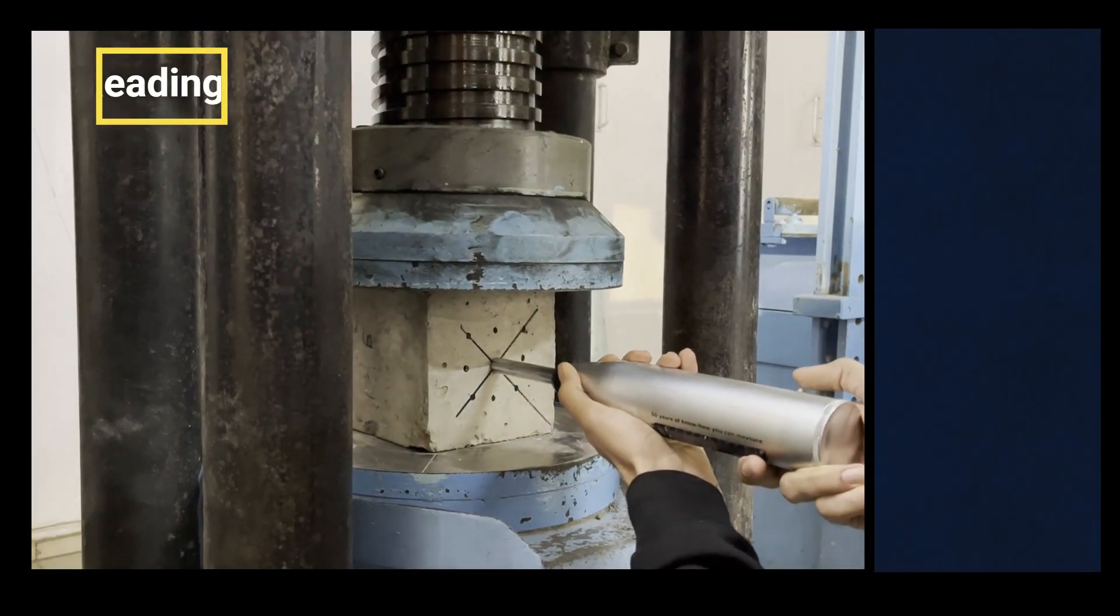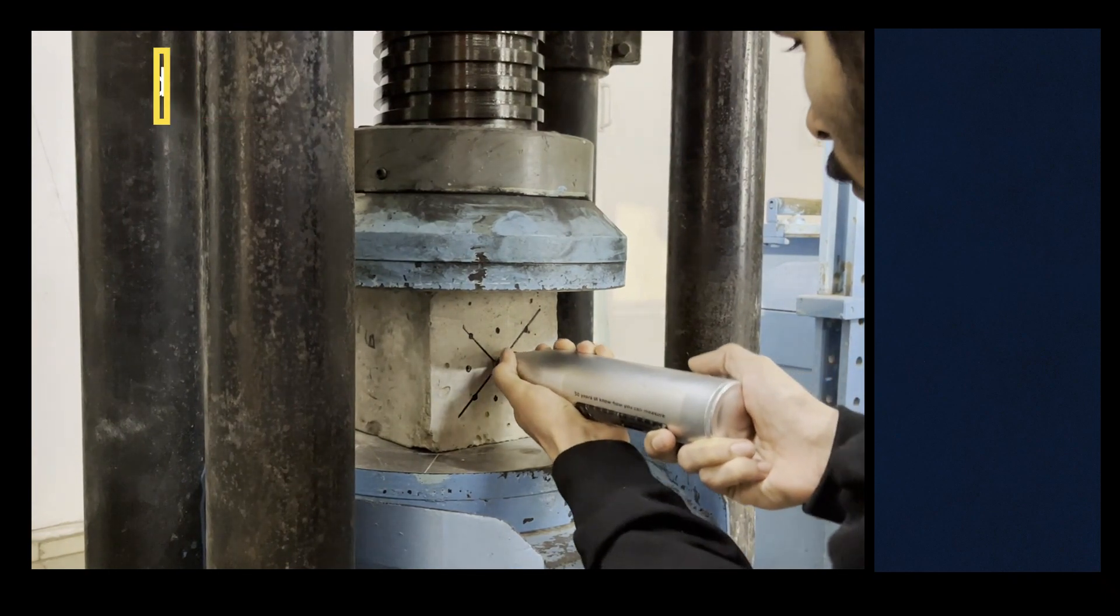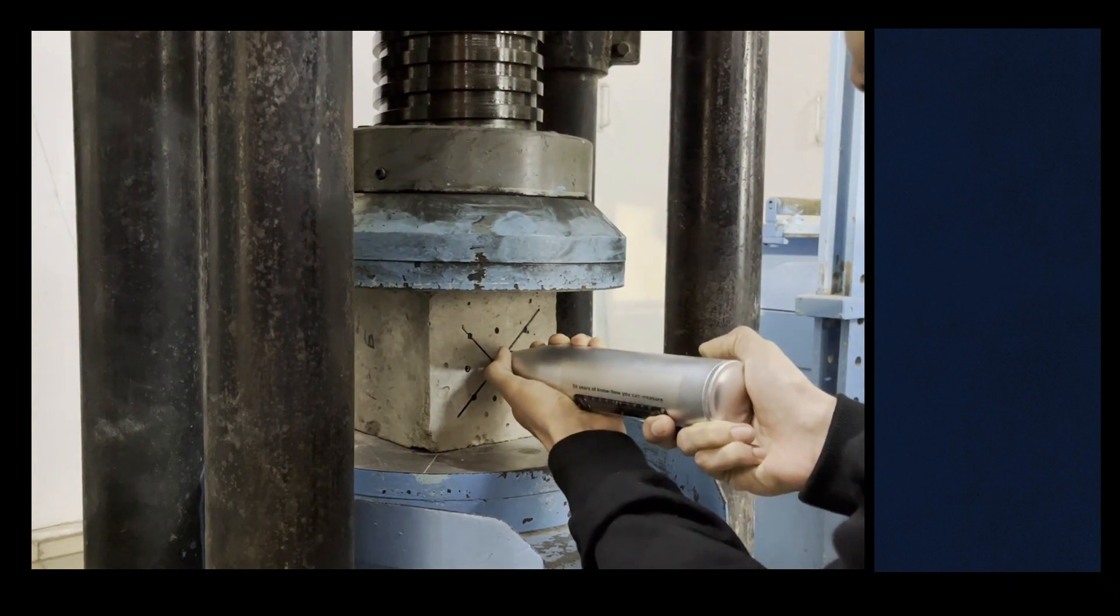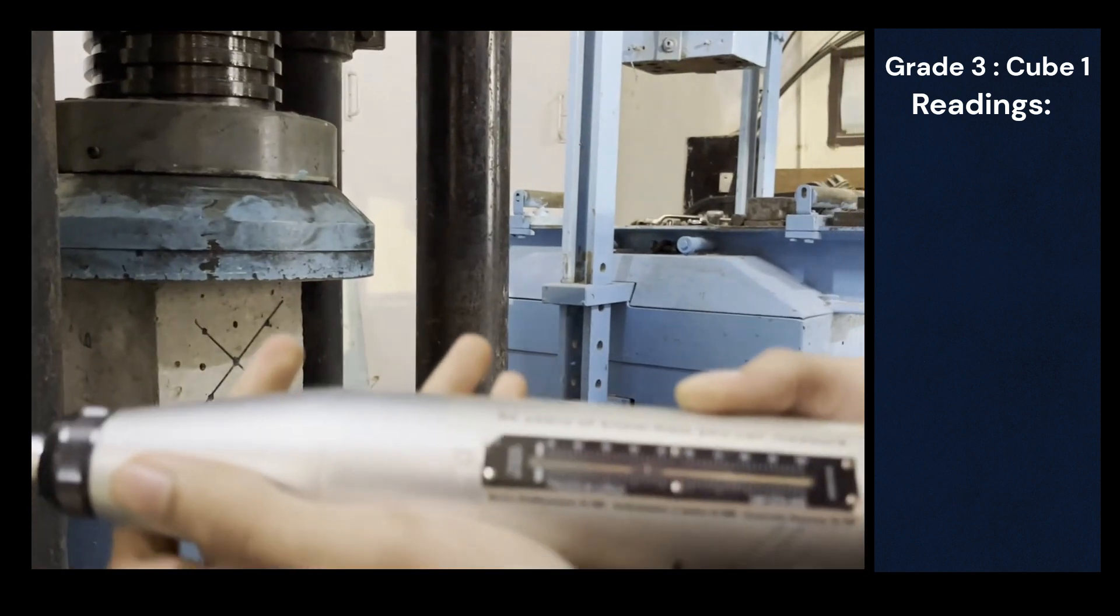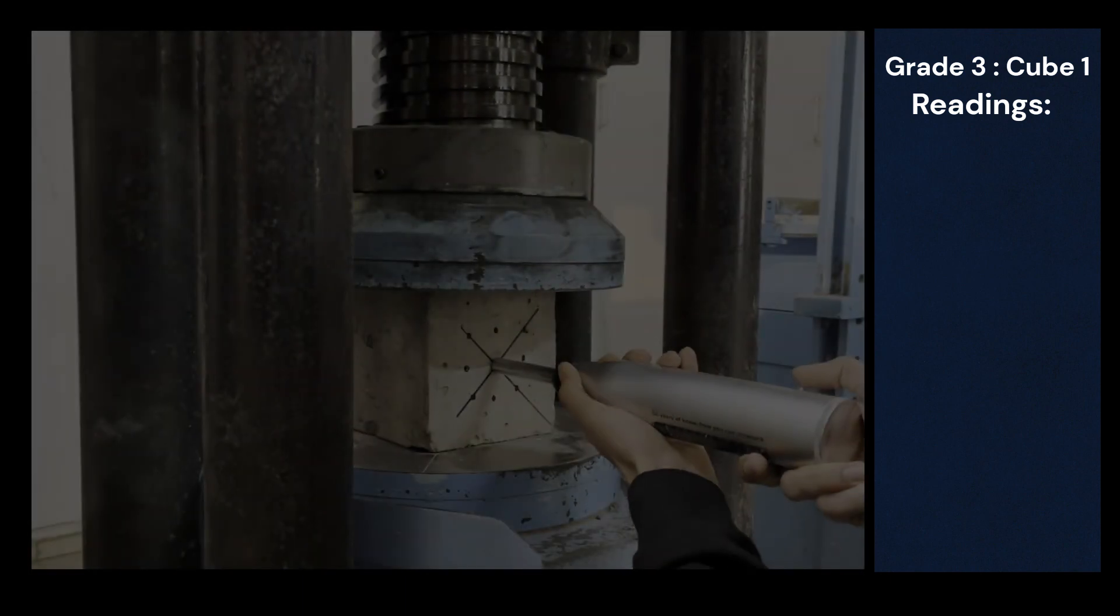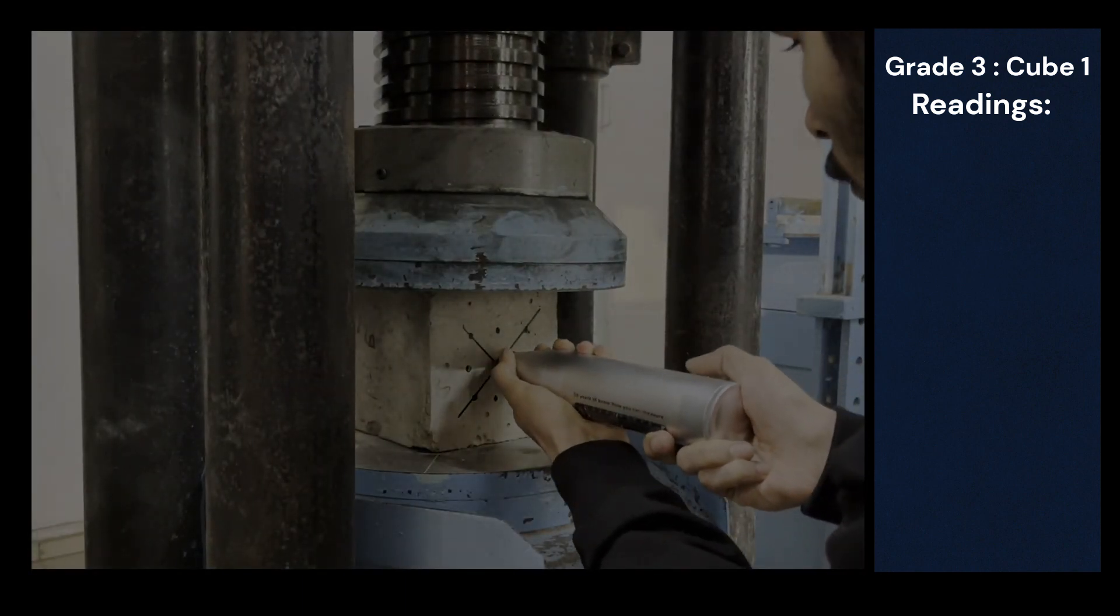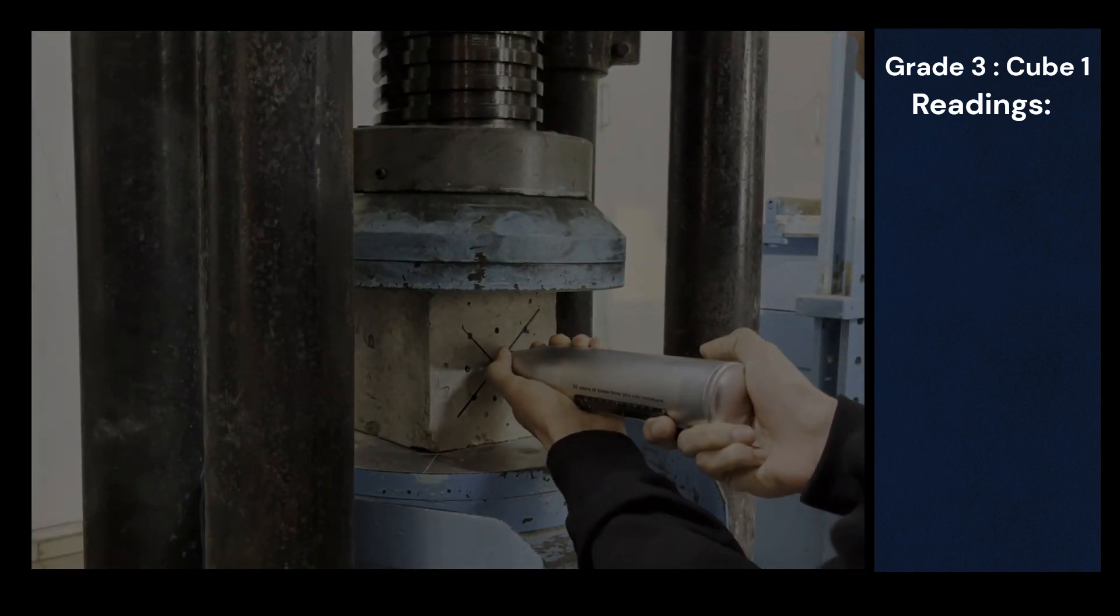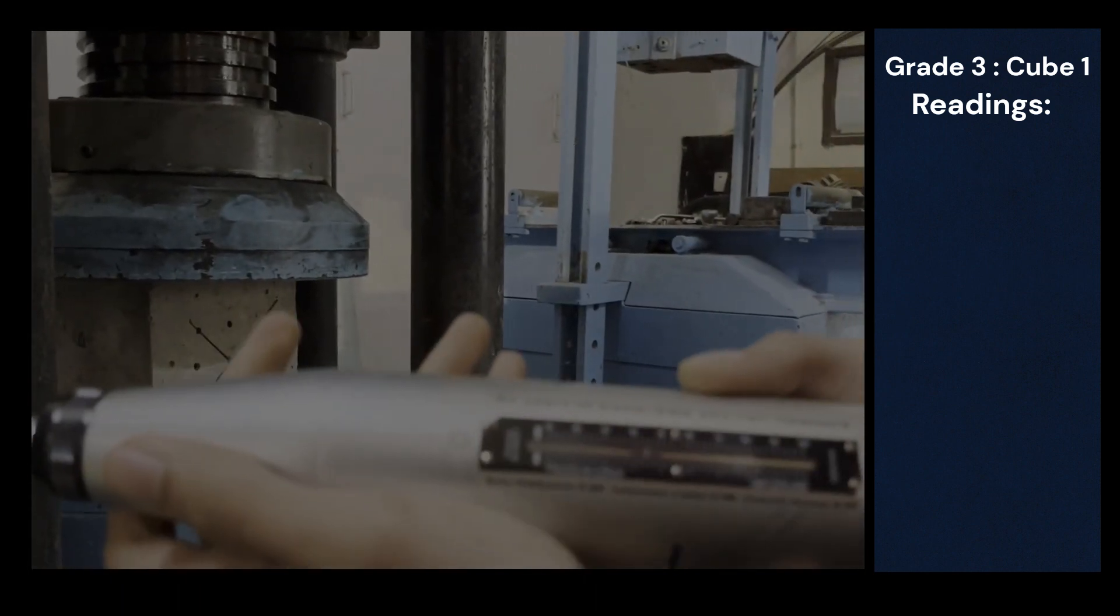Step 3 Readings: Hold the cube specimens in a CTM under a fixed load of 7 MPa, such that the surface containing nine points is vertical. Now holding the hammer normally to the surface of the specimen, press the hammer against the surface until it rebounds.